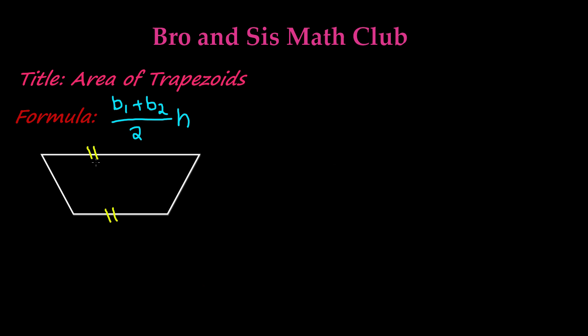So how do you find the area of trapezoids? Well, the formula for finding the area of trapezoids is to add base 1 plus base 2, divide the sum by the number 2, and multiply it by the height.